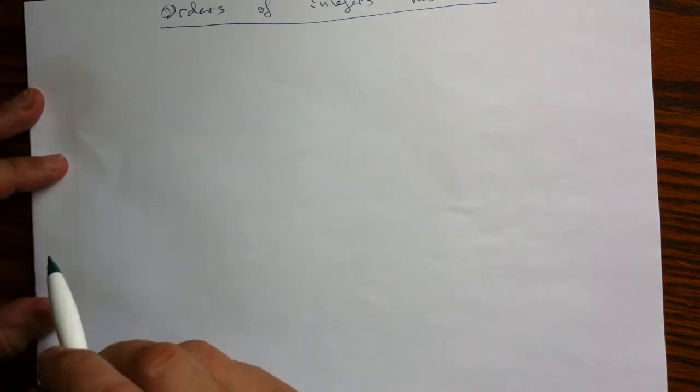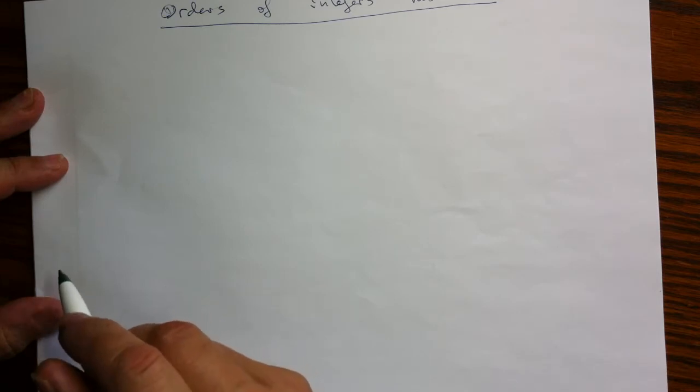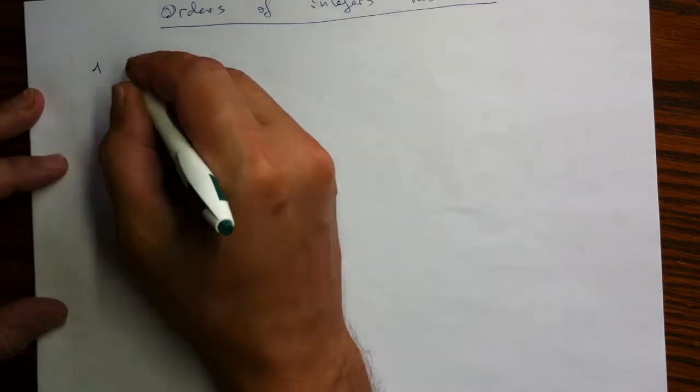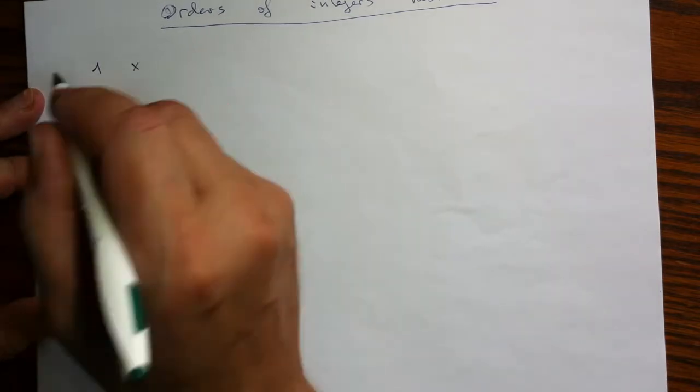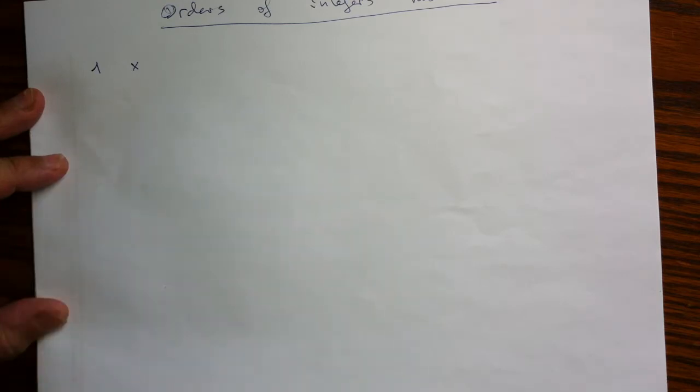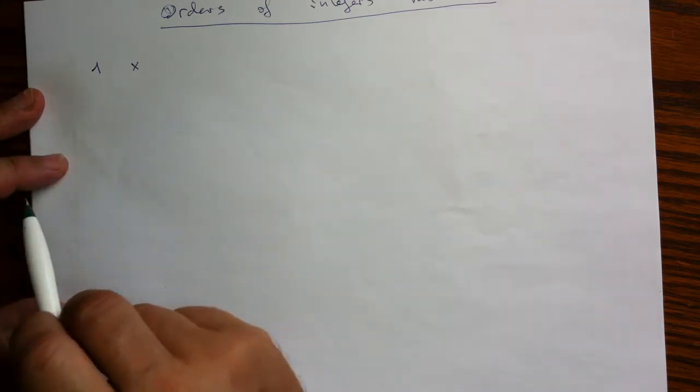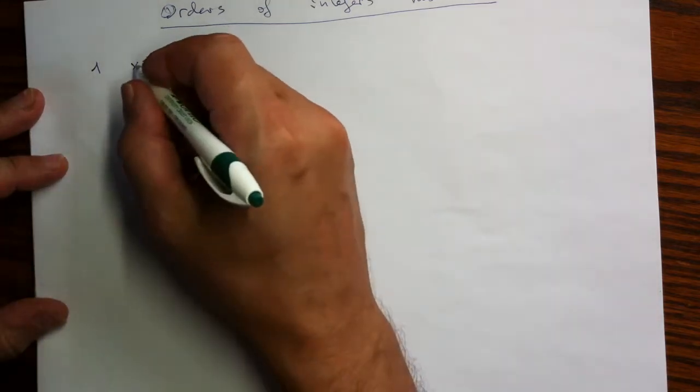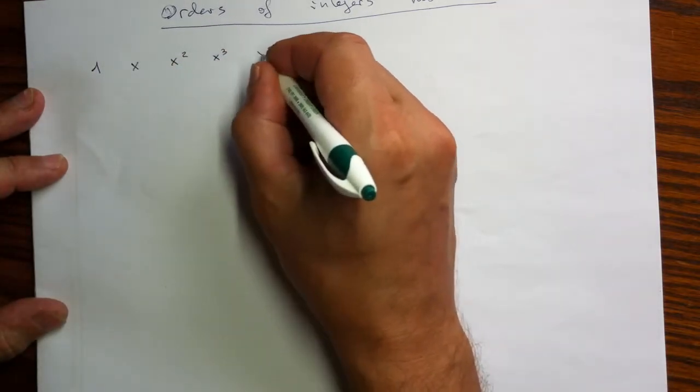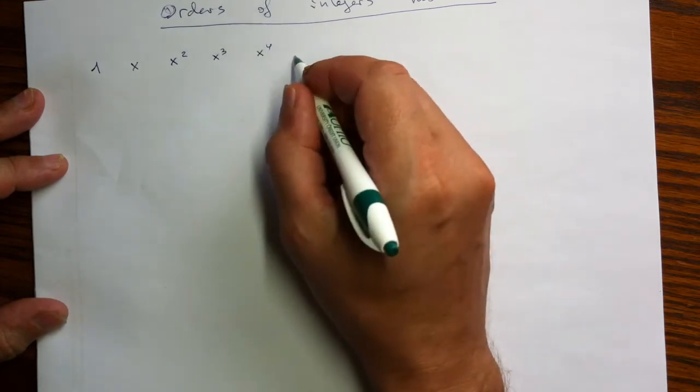Let's imagine that we have a system where we can multiply and where we have element 1. And let's take some other element and start collecting its powers, so just iterate multiplication on it. We can treat 1 as the zeroth power, then it is the first power, then the square, the cube, the fourth, and so on.